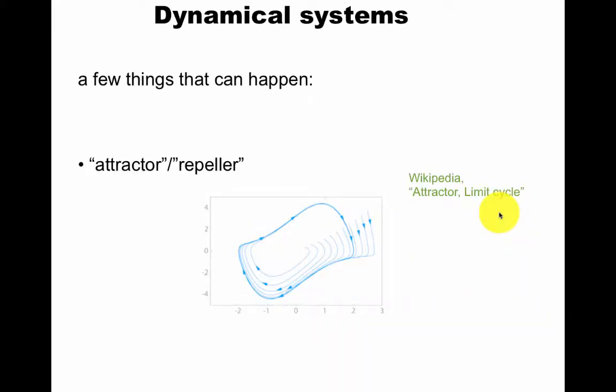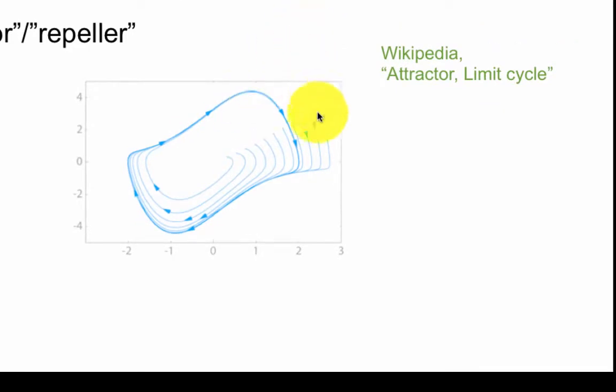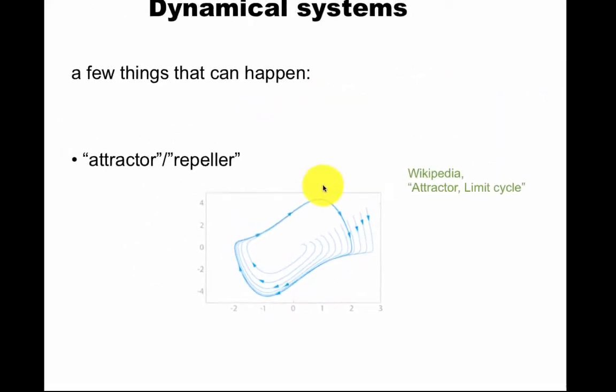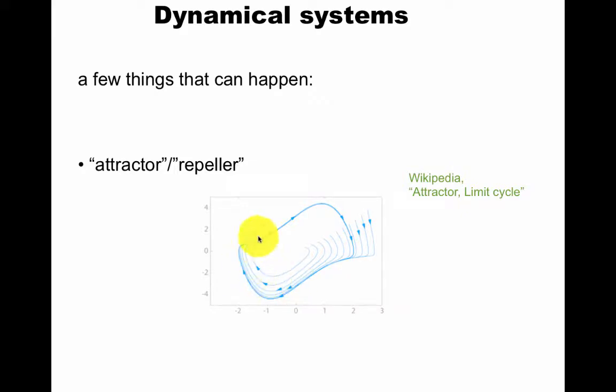Another thing that can happen is you can have an attractor or a repeller. This is called a limit cycle. You come here and you start going like this. But once you start going, you're going to get stuck here. This is pretty intuitive that you can have a dynamical system that can end up in some kind of thing, which is not actually static, but it's stationary. It keeps going back around.